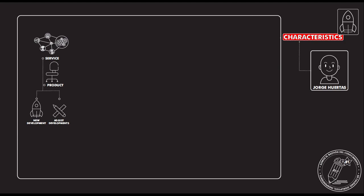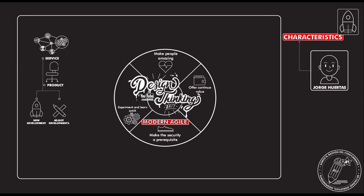The four parts of this methodology are: experiment and learn quickly, make people amazing, offer continuous value — which is extremely important — and make security a prerequisite. If at any point your product or service is not offering continuous value, you have a problem.